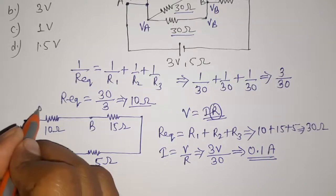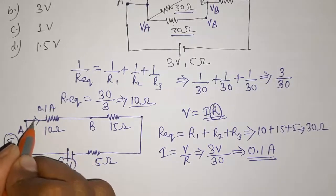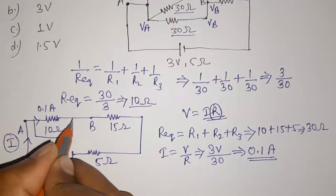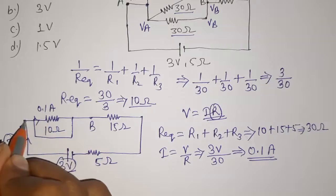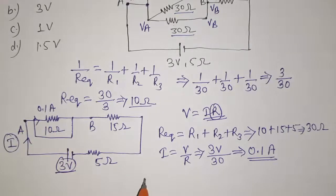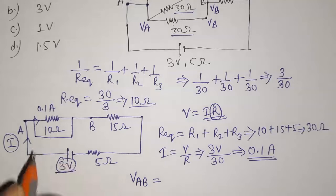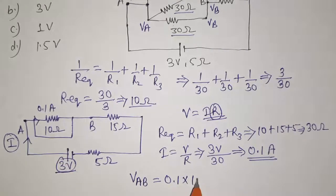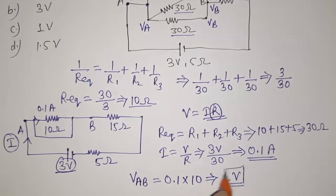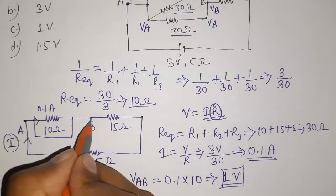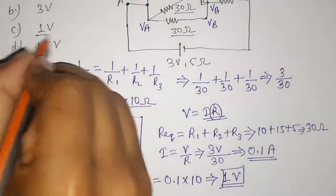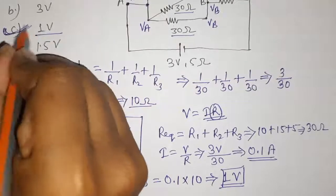This current of 0.1 ampere also flows through the 10-ohm equivalent resistance. The potential drop across it gives the potential difference between points A and B. Potential drop equals I times R, which is 0.1 into 10, equals 1 volt. So the potential difference between A and B is 1 volt — option C is the correct answer.